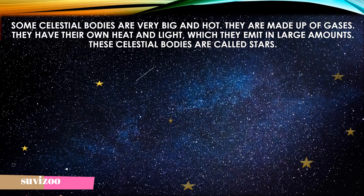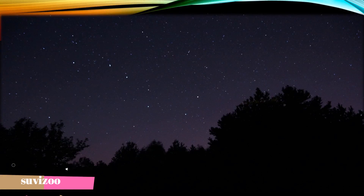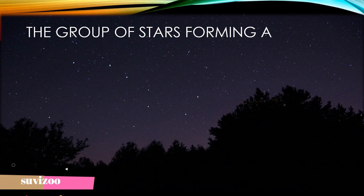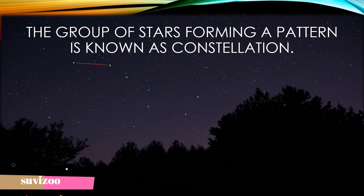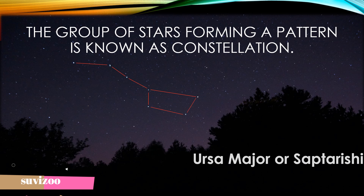Stars twinkle while others do not. Find out the reason from your book or from elsewhere why some stars twinkle while others do not. The group of stars forming a pattern is known as a constellation. Here you can see Ursa Major, or Saptarishi, which is a group of seven stars. From the book you have to find out the names of other constellations.